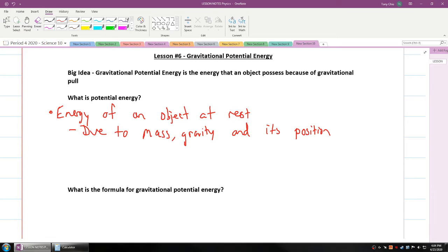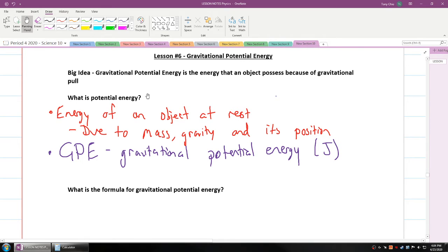So we call this gravitational potential energy, we call it GPE, which stands for gravitational potential energy. And again, its units are in joules. Of course, there's other types of potential energy. There's chemical potential energy. You might remember electric potential energy, which is what you call volts back then, in Science 9.